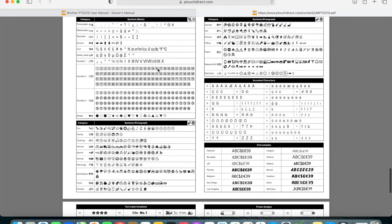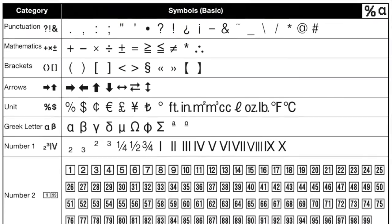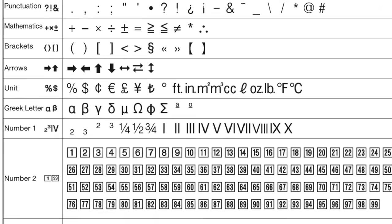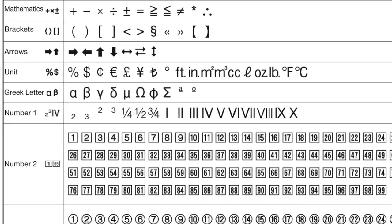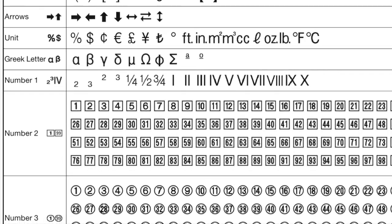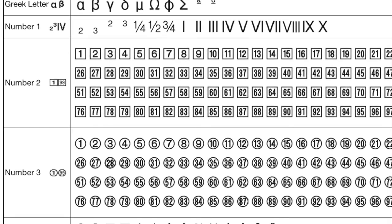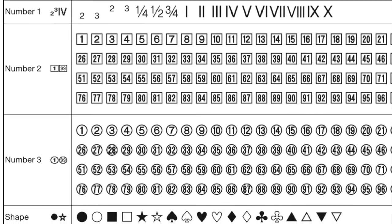For simplicity I've already got this up, so here you'll see a great example of the charts included in the online version of the user manual. You've got your basic symbols: punctuation, mathematics, arrows, units, Greek letters, and so on — you can get a good idea of all the options you have. Now that we've gone through the basic symbols, we're going to start with pictographs.